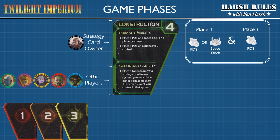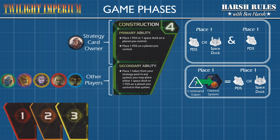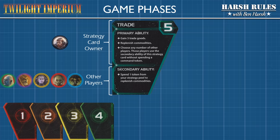Next is the Construction strategy card. With this card, players can place one PDS unit or space dock on a planet of their choice, and place one PDS on another planet of their choice. For the secondary ability, players can place one token from their strategy pool on any system, and they may place either one space dock or one PDS on that planet.